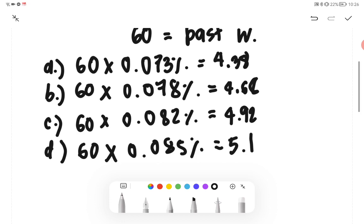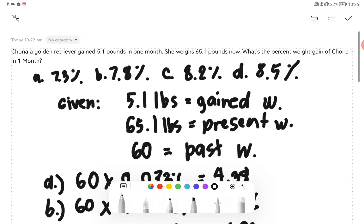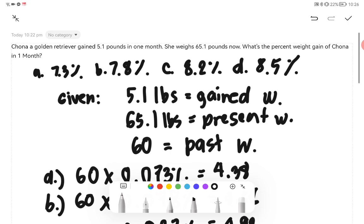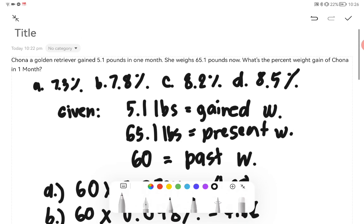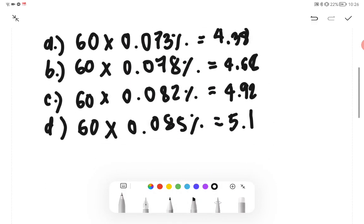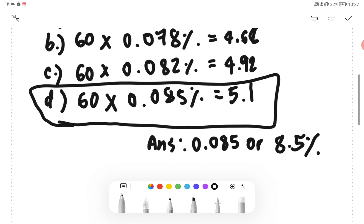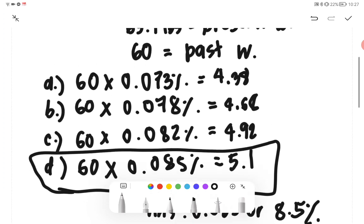So by multiplying this, we are able to find the weight gain by the dog, and we compare it with the given. It says here 5.1 pounds in one month. Therefore, we already have the answer. Our answer is 0.085, or simply 8.5%. This is our final answer.